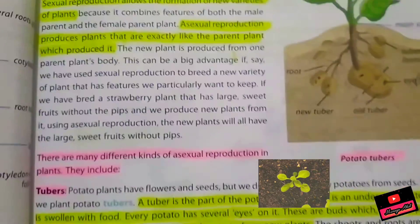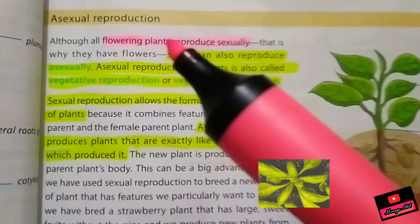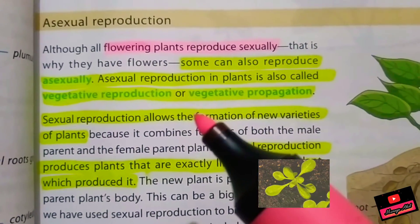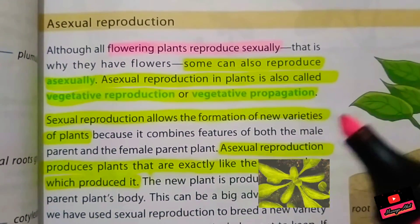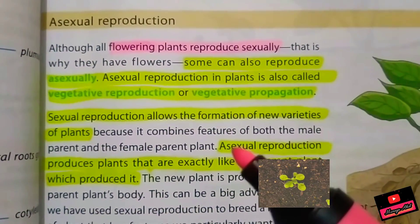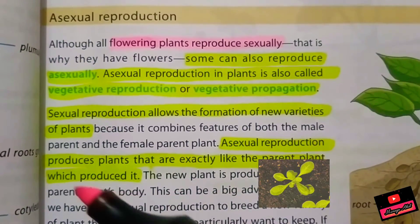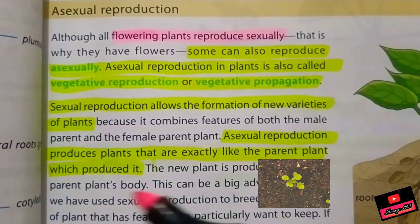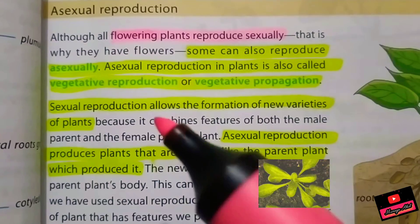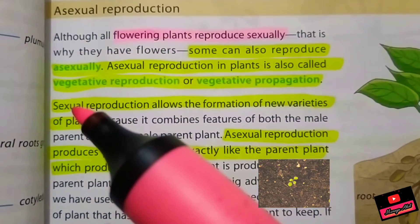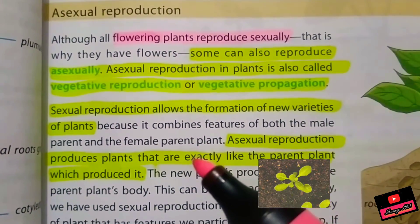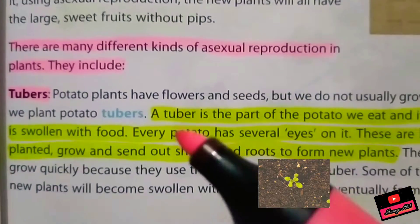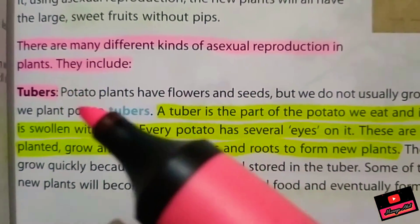There is a comparison written on page number 51. Sexual reproduction allows the formation of new varieties of plants, but asexual reproduction produces plants that are exactly like the parent plant which produced them. So sexual reproduction produces varieties, while asexual reproduction produces the same plants.